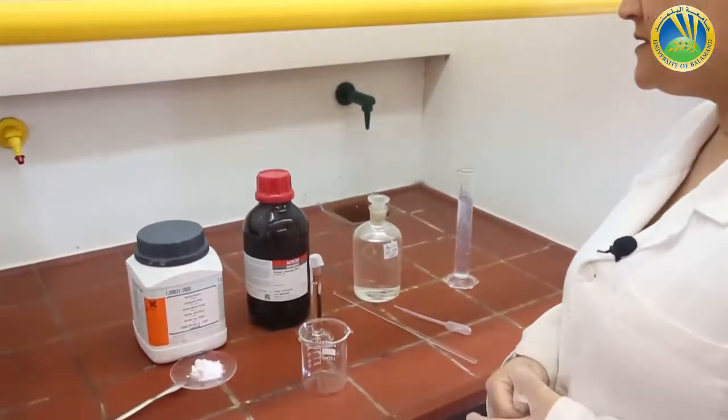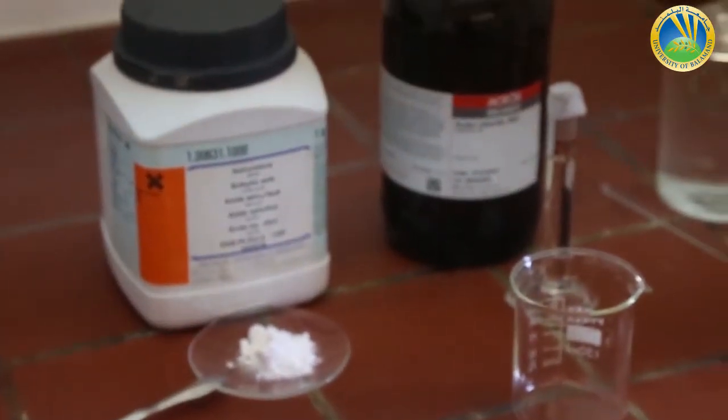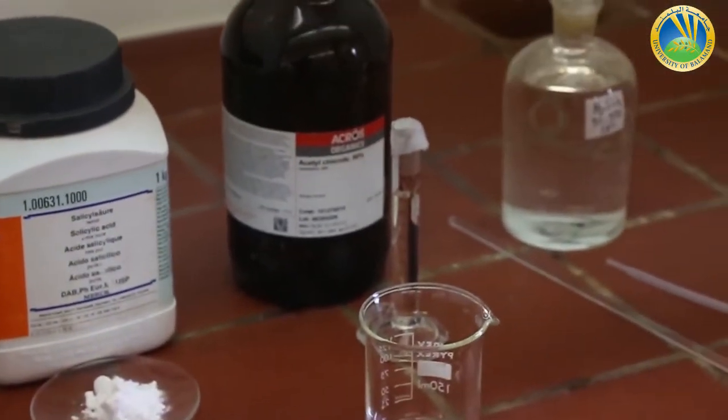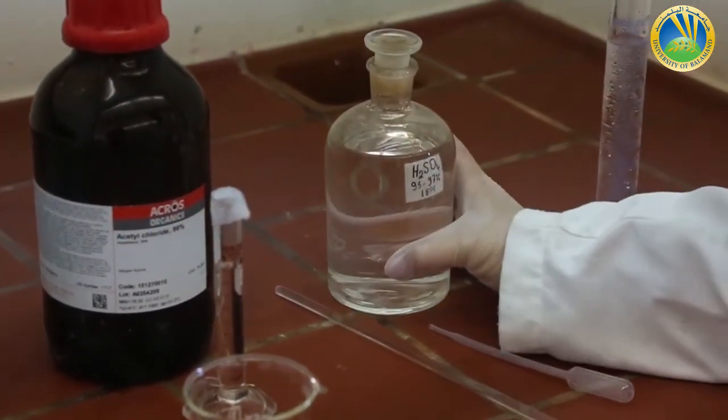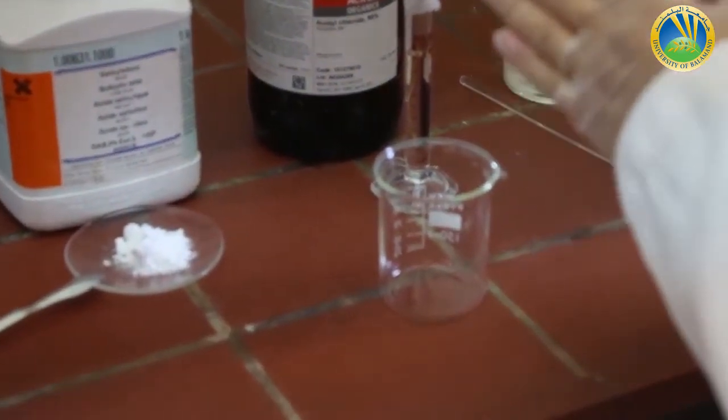To do this synthesis we need 5 grams of salicylic acid, 9 milliliters of acetyl chloride and a few drops of concentrated sulfuric acid. Now I will introduce in order those three reactants.